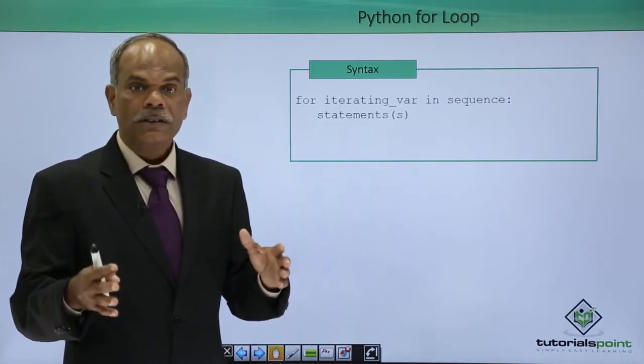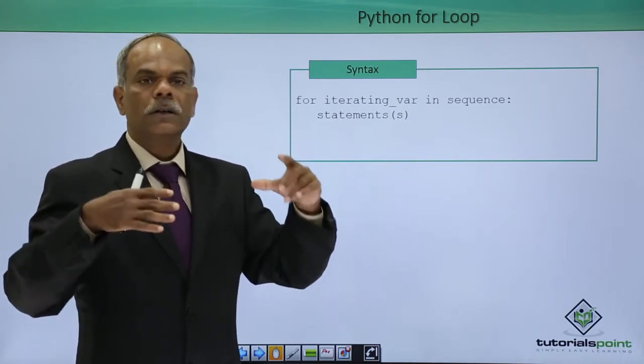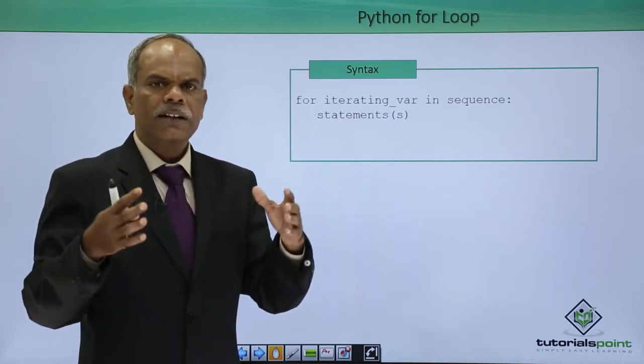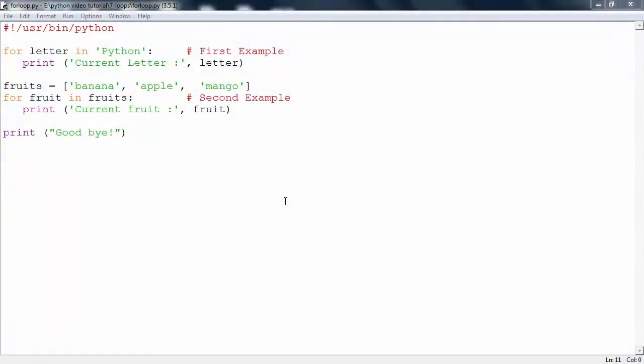How this for statement works, how to write a for statement, how the block is executed, that I will show by a very simple example. This program uses for statement to traverse a string as well as a list, both are sequences in Python.